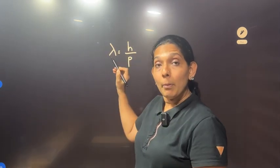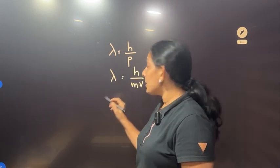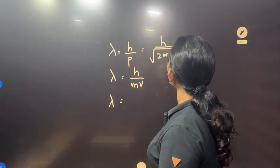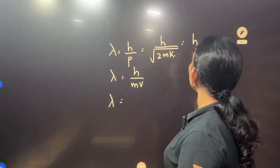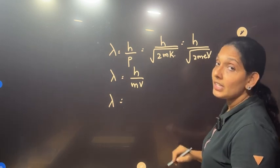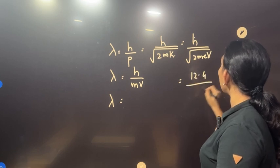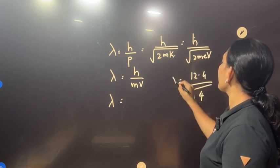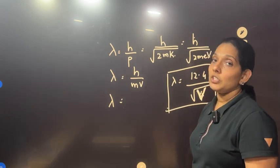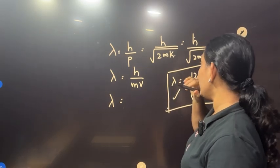H into nu — Planck's constant times momentum. The de Broglie wavelength equation: lambda equals h by root of 2m times kinetic energy. Also written as h by root of 2mEv, where V is potential, giving lambda equals 12.4 divided by root of V.